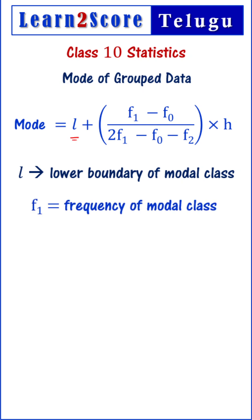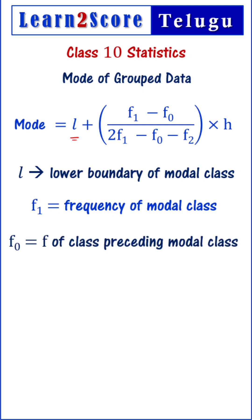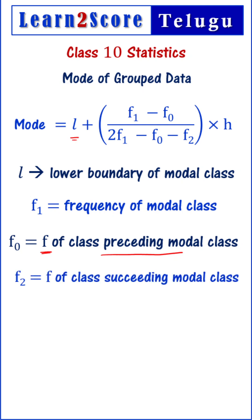F1 is the frequency of the modal class. F0 is the frequency of the class preceding the modal class. F2 is the frequency of the class succeeding the modal class.